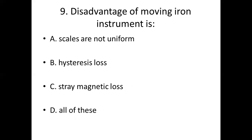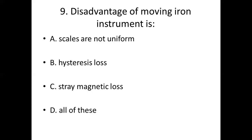Ninth bit. Disadvantages of moving iron instrument are: Option A, scales are not uniform. Option B, hysteresis loss. Option C, stray magnetic loss. Option D, all of these. Answer: Option D, all of these.